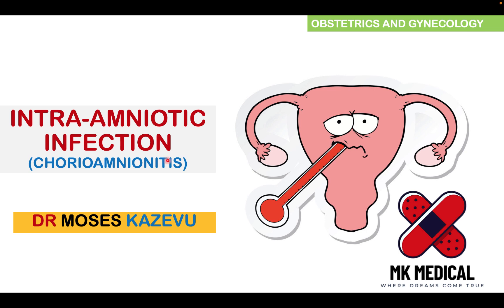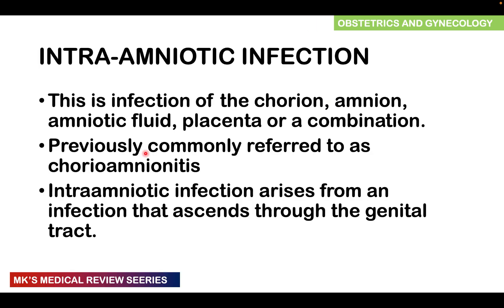In literal terms, it's simply inflammation of the chorion and inflammation of the amnion. But when you talk about intra-amniotic infection, it's not just limited to the chorion and the amnion — it's also going to be involving the amniotic fluid, the placenta, or a combination of the four things. It was previously referred to as chorioamnionitis, but now most literature refers to it as intra-amniotic infection. Remember that most of these infections arise as ascending infections through the genital tract.